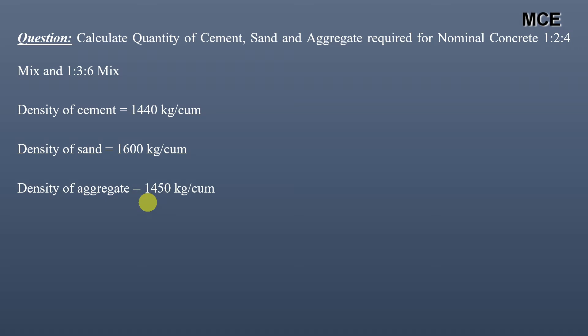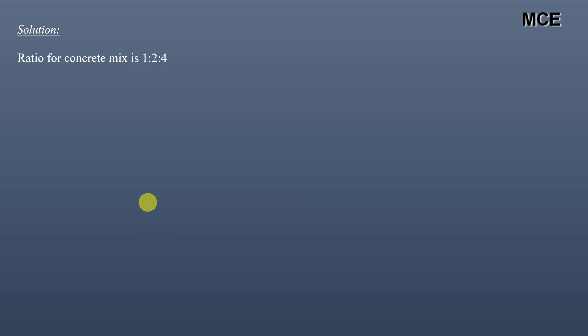First we will take the nominal mix of 1:2:4. The ratio for this concrete mix is 1:2:4, which means if we are taking one part of cement, we will be taking two parts of sand and four parts of aggregate of the same size.